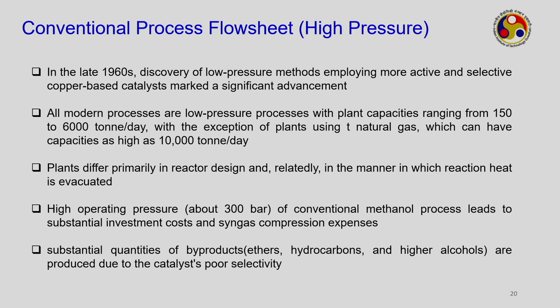In the late 1960s, the discovery of low-pressure methods employing more active and selective copper-based catalysts marked a significant advance. All modern processes are low-pressure processes with plant capacities ranging from 150 to 6000 tons per day, and those using natural gas can have production capacity as high as 10,000 tons per day. Plants differ primarily in reactor design and heat evacuation method. High operating pressures of conventional processes led to substantial investment costs and produced substantial quantities of by-products — ethers, hydrocarbons, and higher alcohols — due to poor catalyst selectivity.